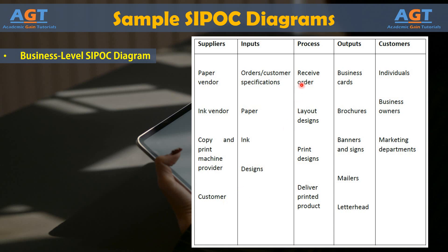The process begins when the company receives an order, then after layout designs, they print designs, and finally deliver the printed product. The outputs of the process are business cards, brochures, banners and signs, mailers, and letterhead. It's a very high-level, simplified SIPOC that shows how customers and vendors provide information and items. The printing company then turns those inputs into products such as printed business cards. The final product goes to individuals, businesses, and marketing professionals who placed the order.